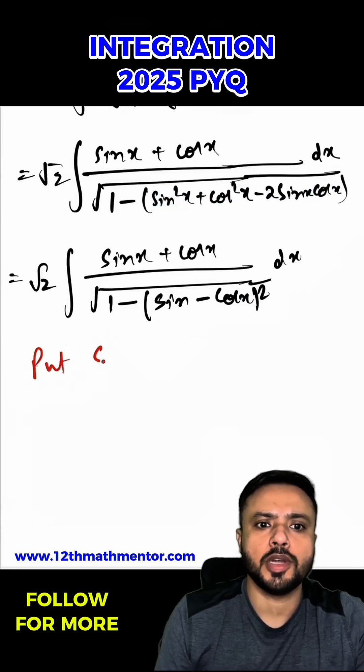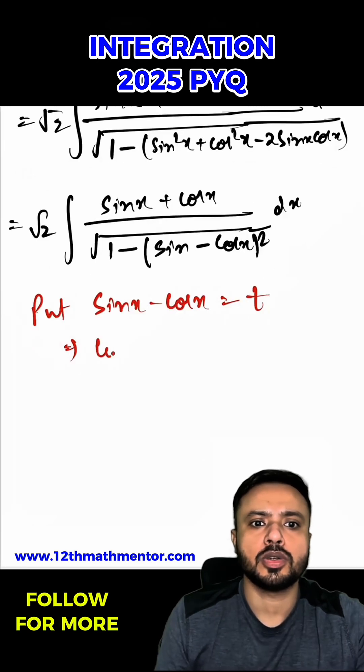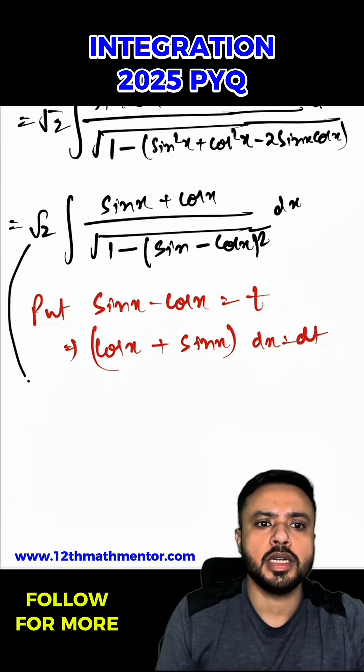Now I'm going to use a substitution. We have to put sin x - cos x as t, so that means cos x + sin x dx will be equal to dt.